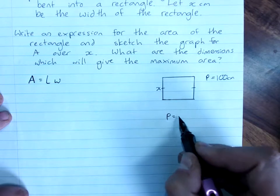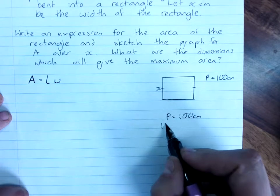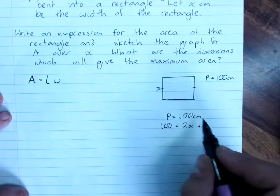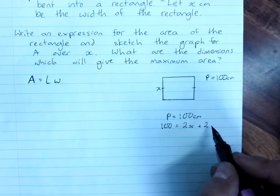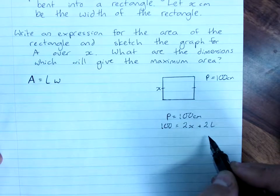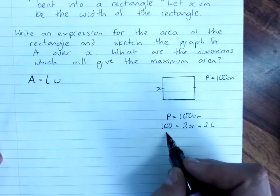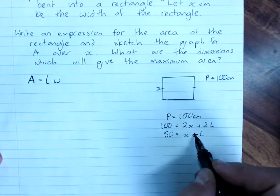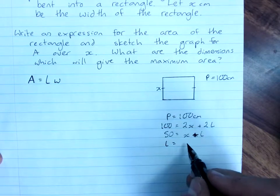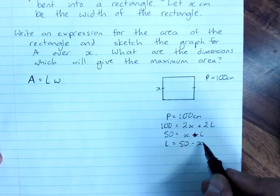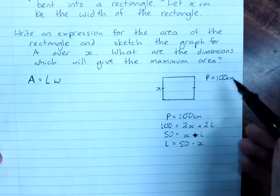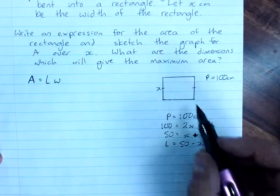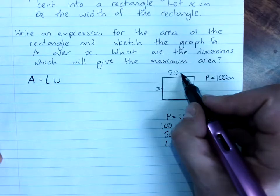And that 100 centimeters is two lots of x plus two lots of the length. So 50 would be x times the length, plus the length. So the length is 50 minus x. So I probably wouldn't need to show all this working. It's quite self-evident how we get that. But you want an expression for the length in terms of x, 50 minus x.